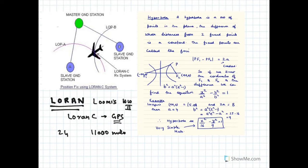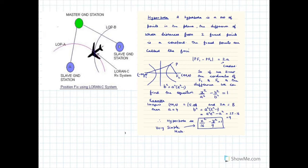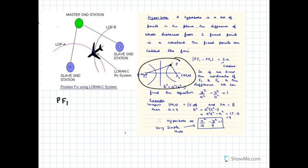Let me tell you how to apply this system. For using this system, you need to first understand how to write the equation of a hyperbola. A hyperbola is a set of points such that the difference of whose distances between two fixed points is a constant. I want you to look at this diagram — P is a point.